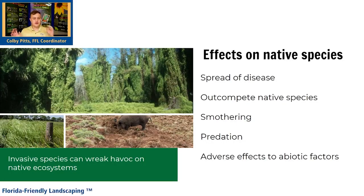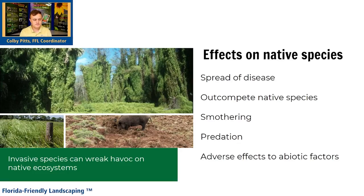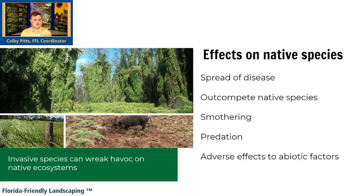Now we'll get to the effects on native species. Native plants and animals are adapted to live here, and every native plant and animal has a role to play — an effect on the ecology. It's like a house of cards: if you take something out, it's all going to fall down. There's a domino effect. In our examples here, you can see in this big picture up top there's a whole lot of Old World Climbing Fern that has just covered that entire area, and the palm fronds on the top left are pretty browned out — that Old World Climbing Fern is smothering them.